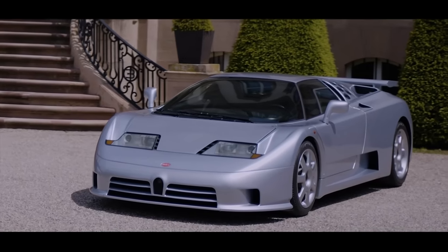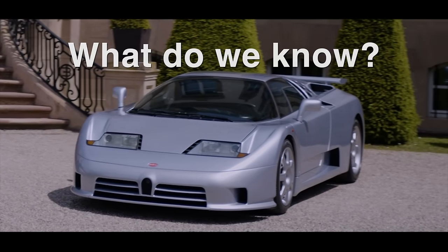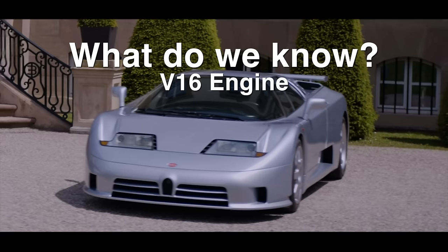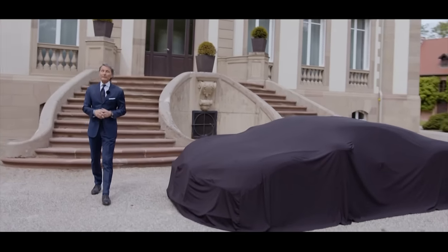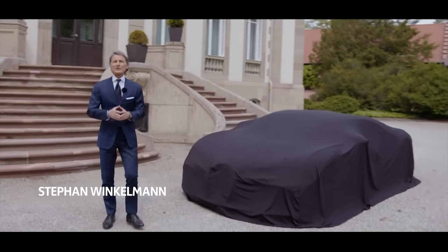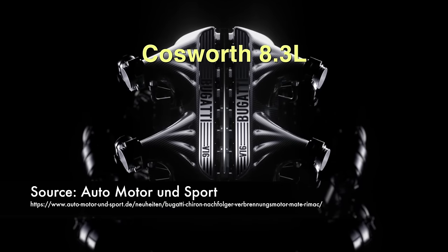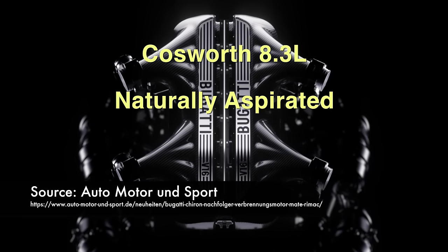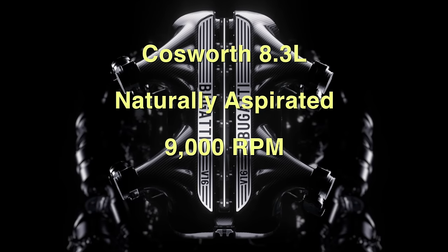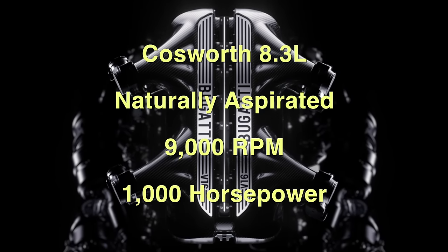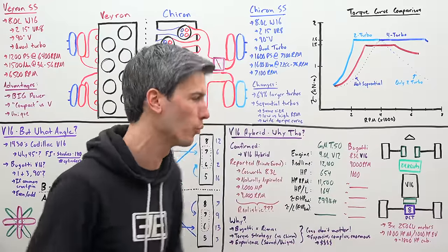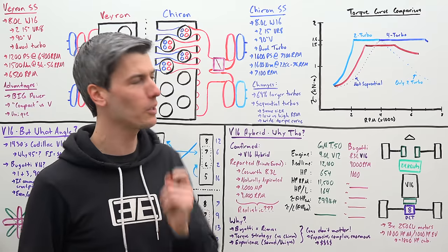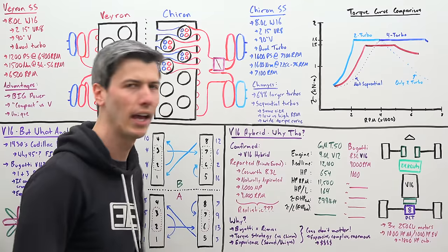It's important to understand that all Bugatti has informed us of thus far is that it's a V16 engine and it's part of a hybrid powertrain. Those are the only two things confirmed. Reportedly, however, there have been private customer presentations where more information has been divulged. Allegedly, it's a Cosworth developed 8.3 liter naturally aspirated V16 revving to 9000 rpm and producing 1000 horsepower. I don't really care about speculation - I'd rather just learn the numbers from Bugatti directly when they choose to reveal them. However, that doesn't mean we can't do a little bit of math and just see if these reported numbers actually make any logical sense.